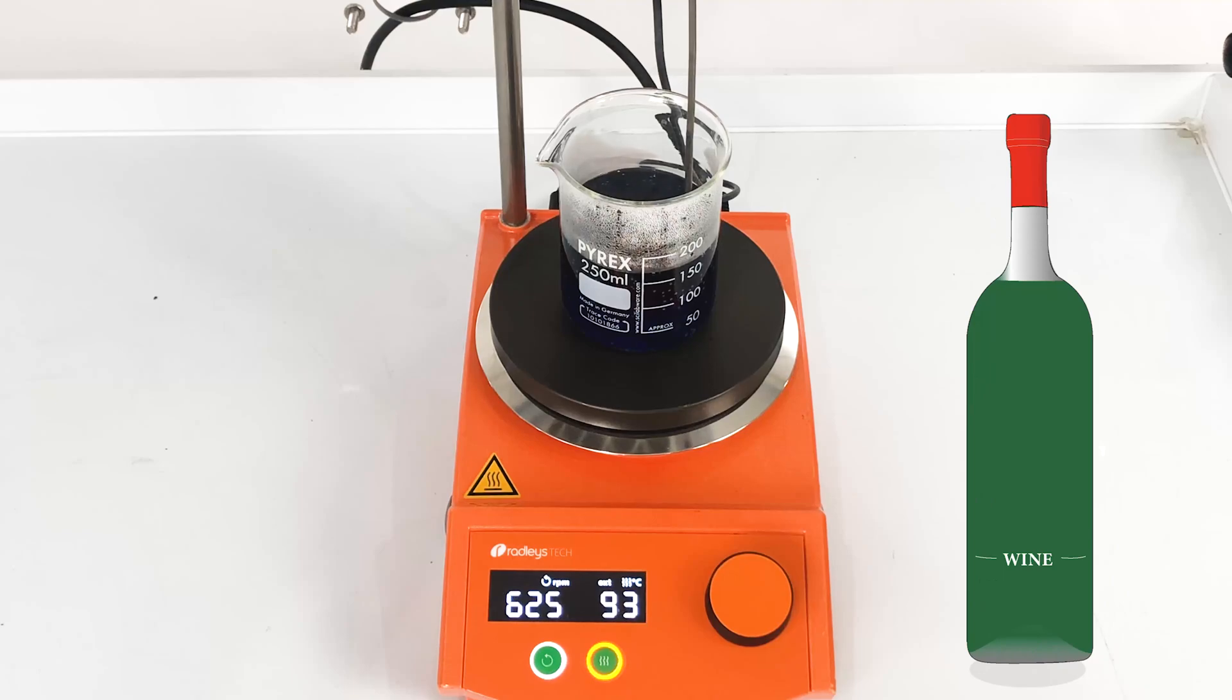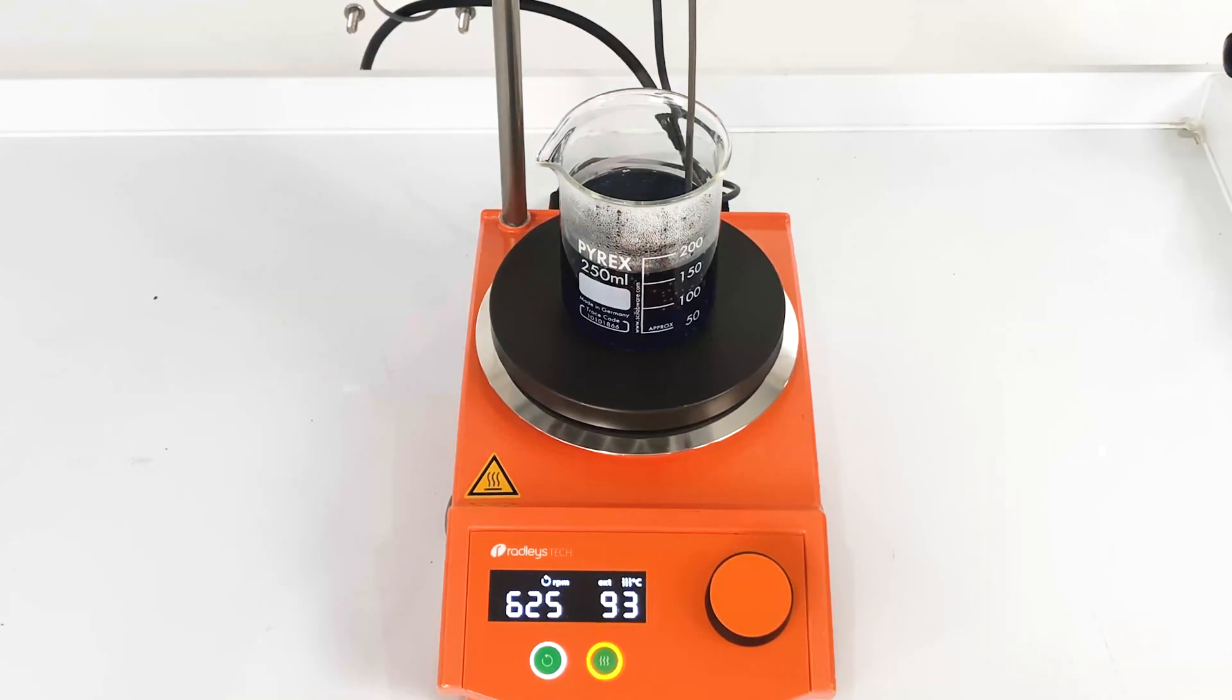This is great when you're trying to make a red wine reduction for your dinner, but not when you're conducting a chemical reaction. So to stop the vapor from evaporating into the atmosphere, we need to incorporate a cool surface so that the vapor can condense.